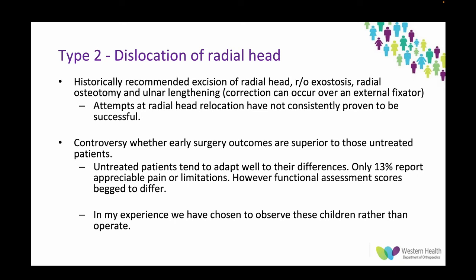Dislocation of the radial head is another contentious issue. Historically, excision of the radial head, removal of the exostosis, and radial osteotomy with ulnar lengthening — over an external fixator or Z-lengthening — was recommended. Attempts at radial head relocation have not consistently proven successful, and there is controversy whether early surgery outcomes are superior to untreated patients. Untreated patients, as with many children with hand and forearm deformities, adapt very well — only 13% report appreciable pain or limitations, though objective functional assessment places them below two standard deviations of a normal population. The general trend at our centre is to observe rather than operate on these dislocated radial heads, noting excellent cosmetic results but only modest functional improvements.